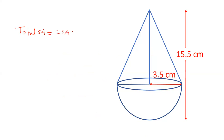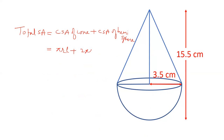931 by 3 plus 931 by 4 — अब curved surface area निकालते हैं। Curved surface area of cone है pi r l, और hemisphere का curved surface area है 2 pi r squared। पहले हमें L यानी slant height निकालना होगा।